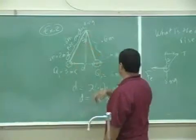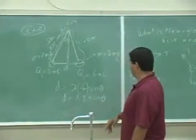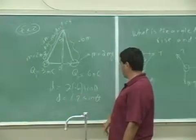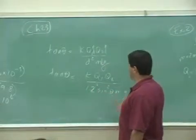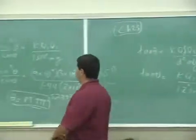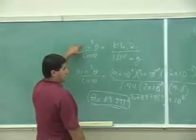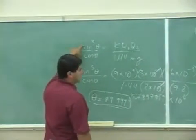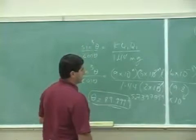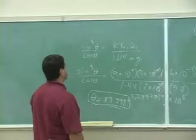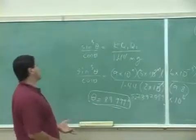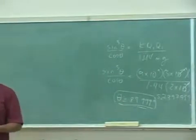The length of the string was 0.6 meters, non-conducting string. The distance d is double the distance of this triangle, which is 0.6 times sine theta, so it would be 1.2 times sine theta. I got sine cubed theta over cosine theta equals k q1 q2 over 1.44 mg. You put in all the numbers, put this into the solver, and you get 89.99 degrees.